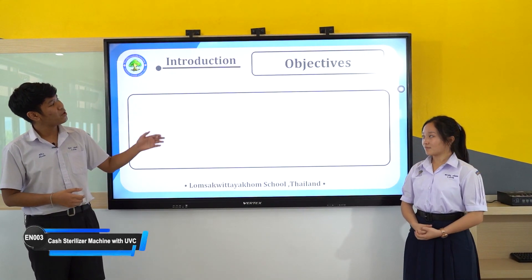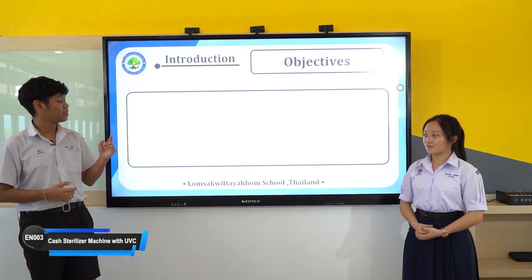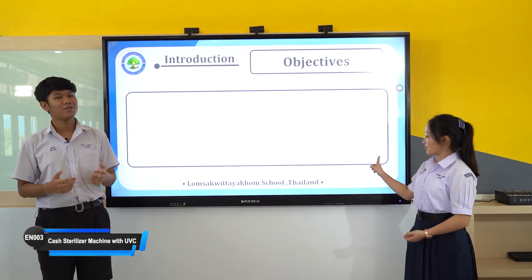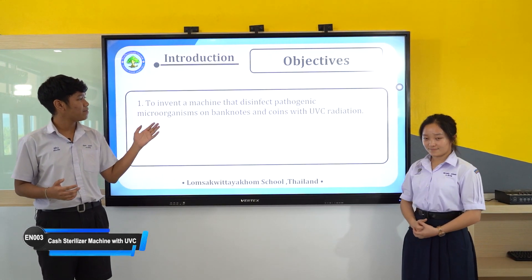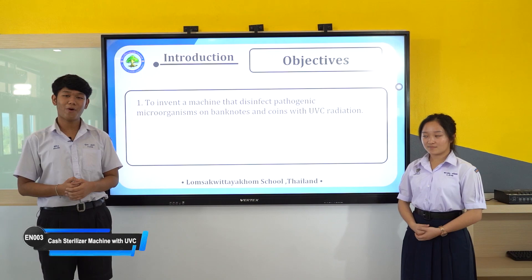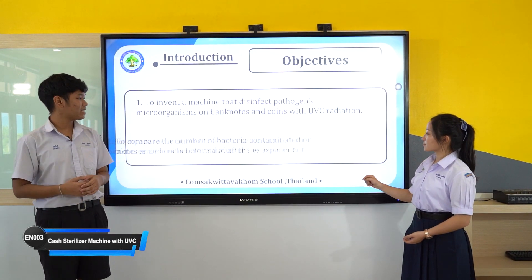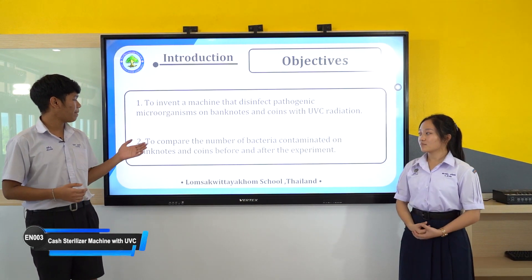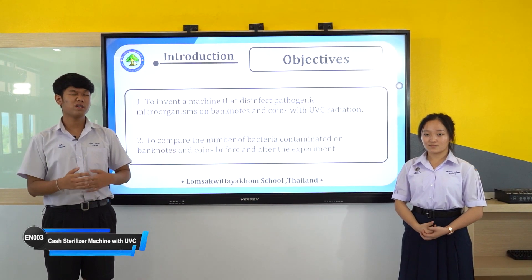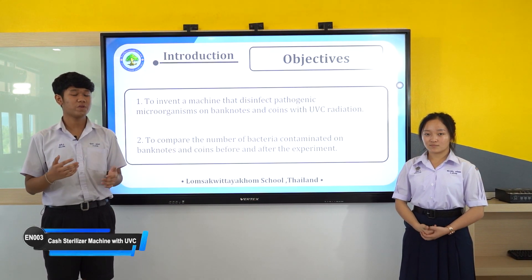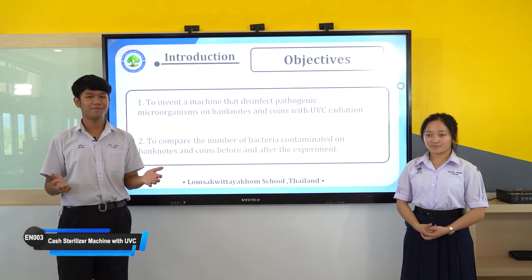First, we have to know about the objectives. The first objective is to invent a machine for disinfecting pathogenic microorganisms with UVC rays. The second objective is to compare the number of bacteria contaminated on banknotes and coins before and after the experiment.